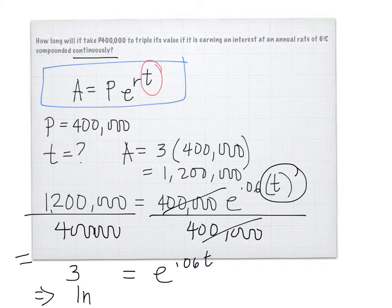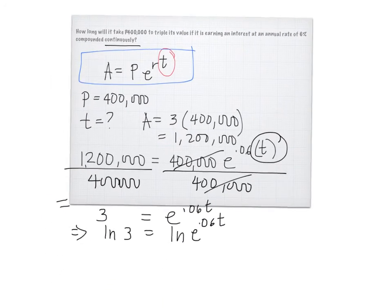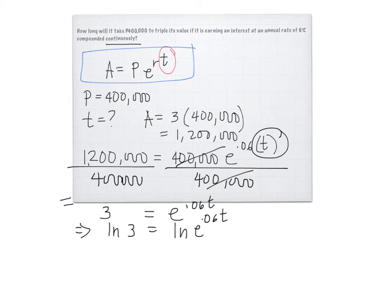I'll take the ln of both sides, so ln 3 equals ln of e to the 0.06t. I need to use ln so that I can use the property that the exponent of the expression e under a logarithm can be written in this way, and then you have ln e.